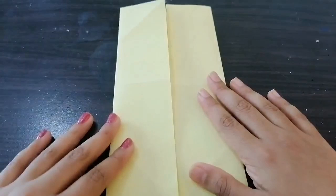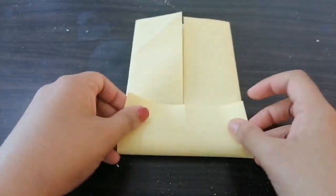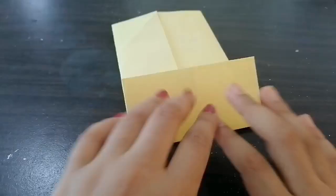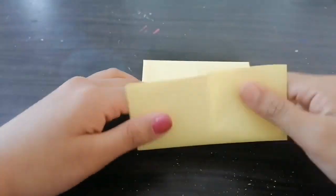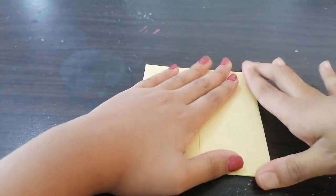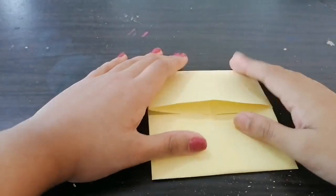Now you can see a line over here. You need to fold it till the line like this. After this, we need to turn and do it on this side.